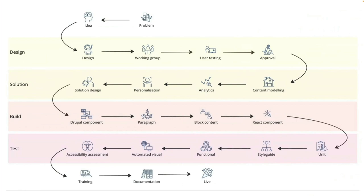The next step: build it. The Drupal component — the single directory, Twig, HTML, CSS — how that maps into paragraphs, how that maps into block content. We also build a React component because we have one-for-one parity with everything in both React and Twig so we can build apps in both. Then unit testing, style guide itself, functional testing on that component, automated visual testing, confirming accessibility, building training modules, writing documentation — and then finally we get to go live.